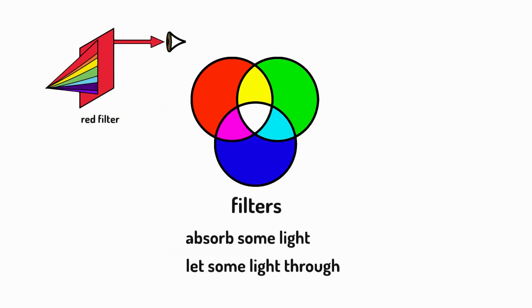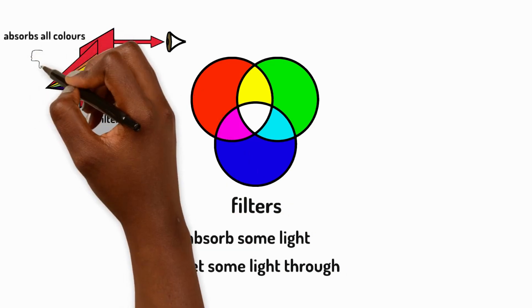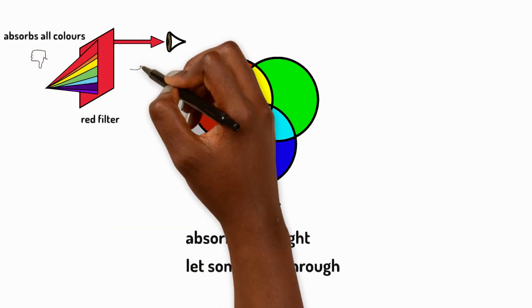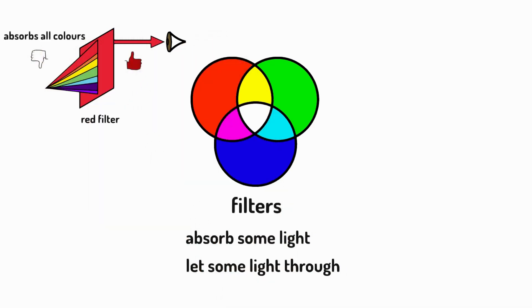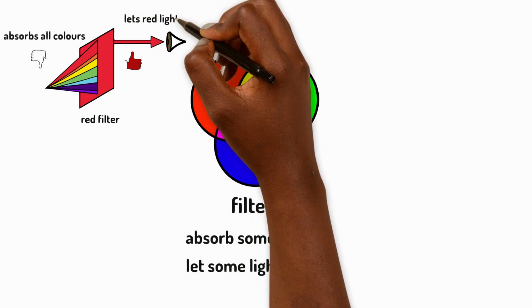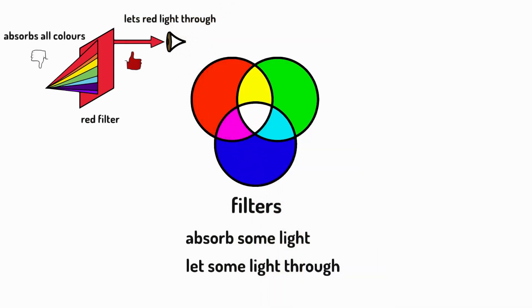When a red filter is placed in front of a light source, it absorbs all the colours of light but lets red light through. This gives a red tint to everything you look at, and red objects appear even more red.